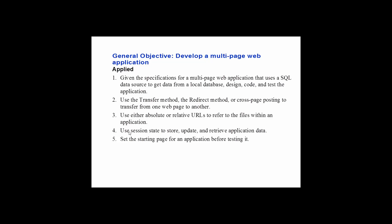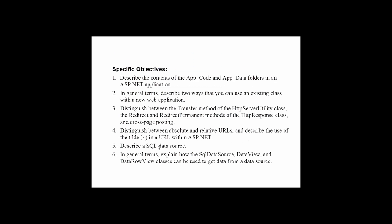Also, how to set a starting page for the application - that's pretty simple. We're going to look at some of the different important folders in web forms: app code, app data. We're going to add classes to our web application, introduce a C# class, work with the transfer methods, work with absolute and relative URLs, work with the SQL data source, and how to pull data out of that data source and put it on the web page.